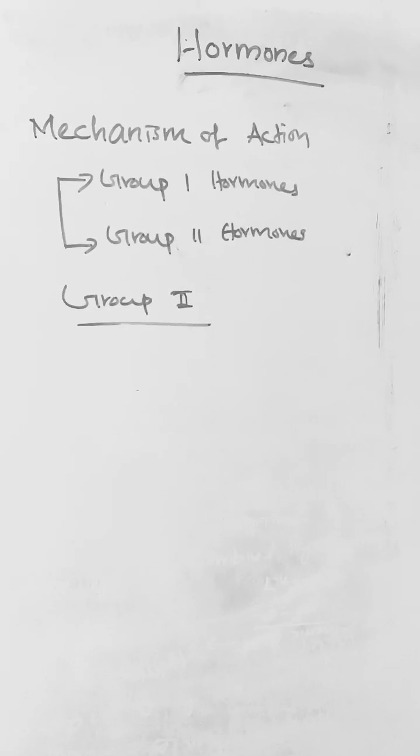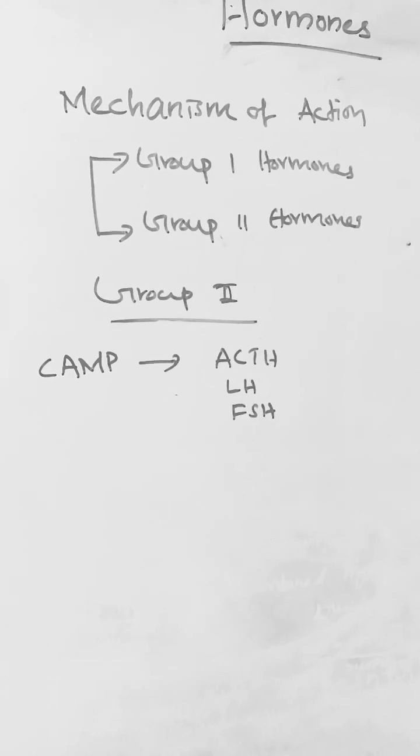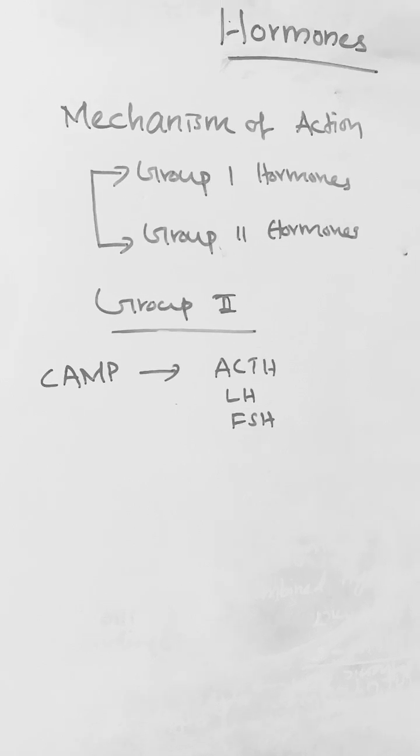Based on second messenger, Group 2 hormones are classified into four groups. If the second messenger is cyclic AMP, for example, ACTH, LH, and FSH.